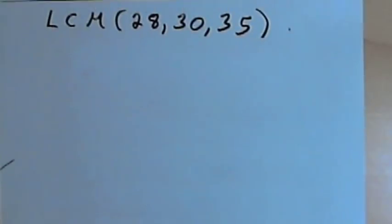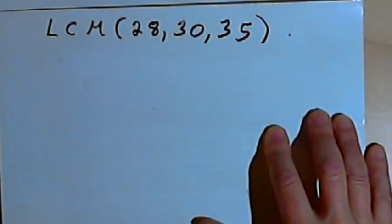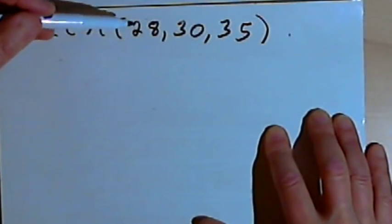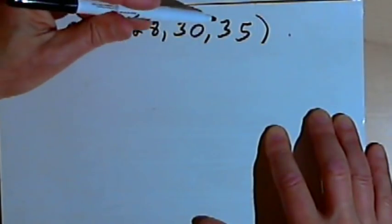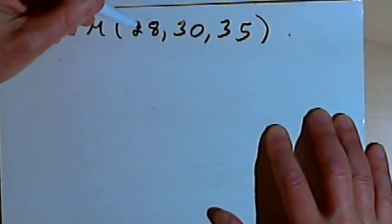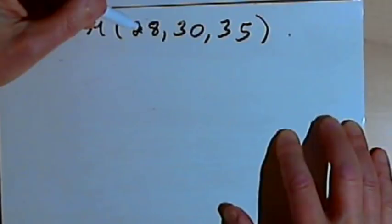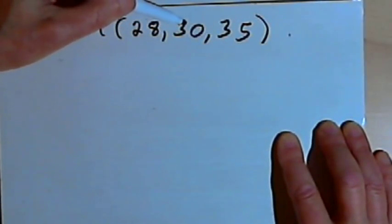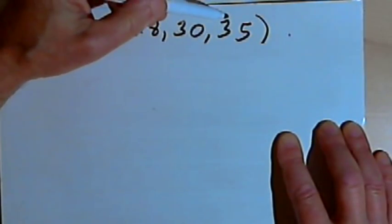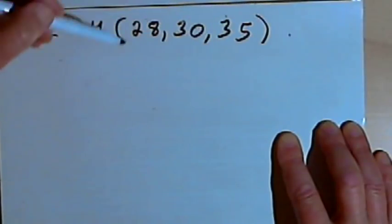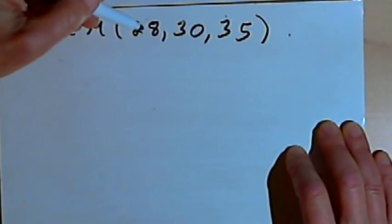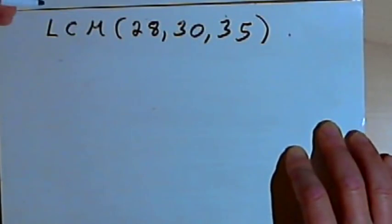Here's the first problem. I've got to find the least common multiple of 28, 30, and 35. I could do this with prime factorization — I could make a factor tree for each number, take all the prime factors of 28, put those in a list, add any prime factors of 30 not already in the list, then add any from 35 not already in the list, and multiply them all together to get the LCM. But there's a much faster way.